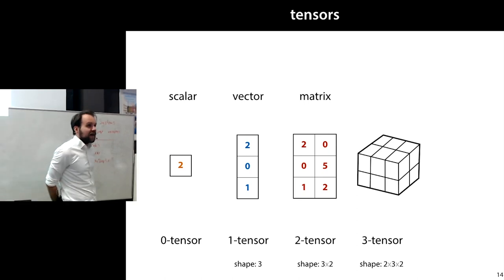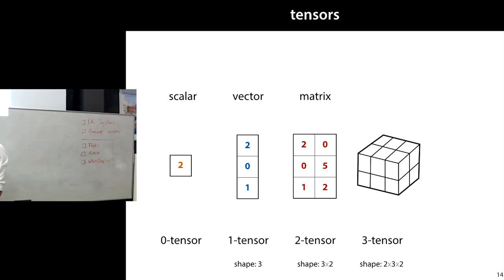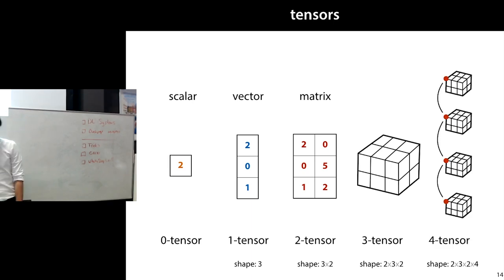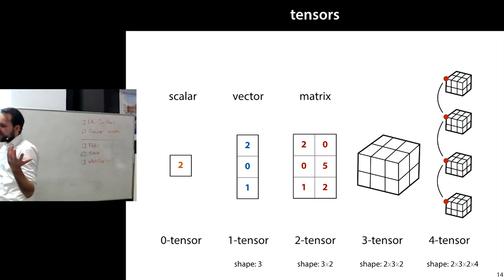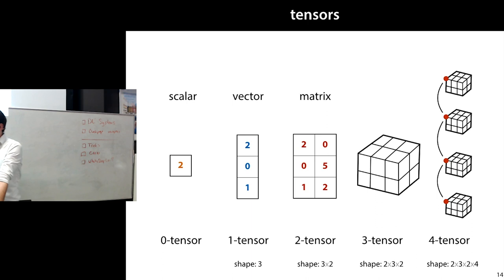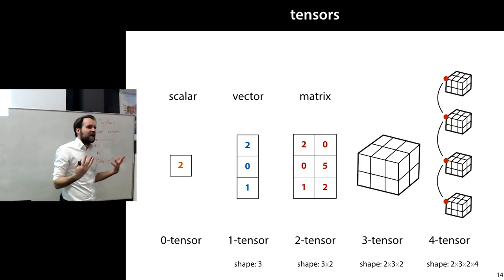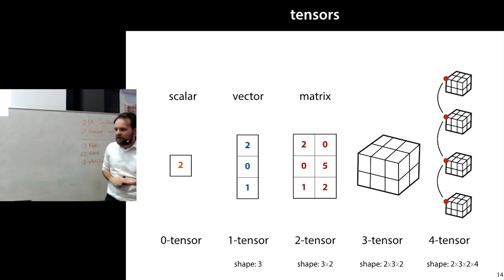A three-tensor is a bag of numbers where you can change the number by moving in three directions. There's no standard name for this, and it has a shape defined by three numbers — it looks like a Rubik's cube type thing. A four-tensor changes in four dimensions; it's difficult to visualize but the basic principle is the same. We use this data structure to describe everything in our model: the weights, the data, the loss.